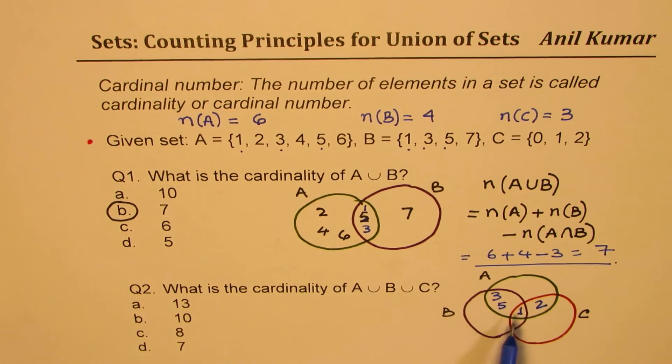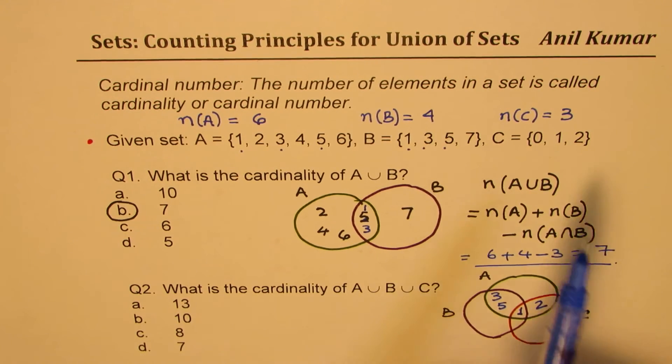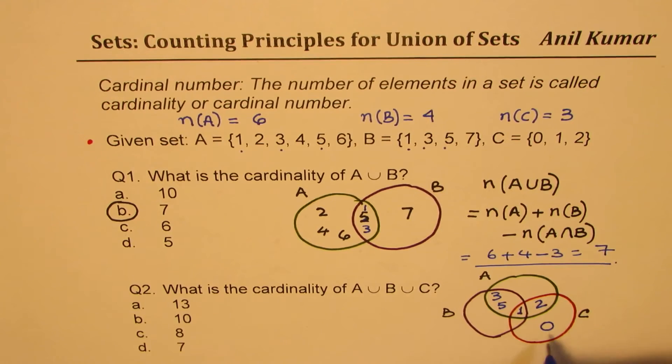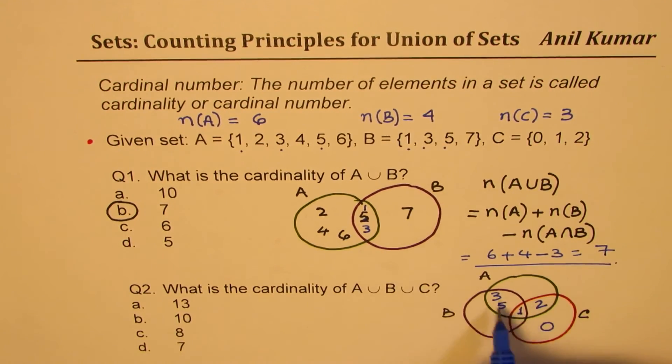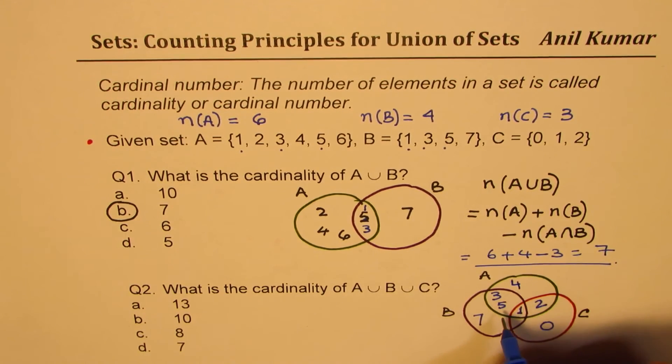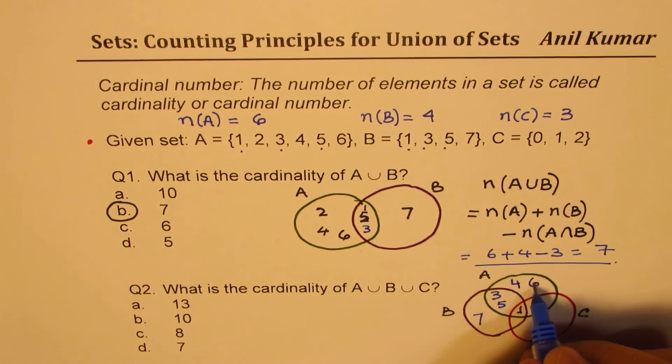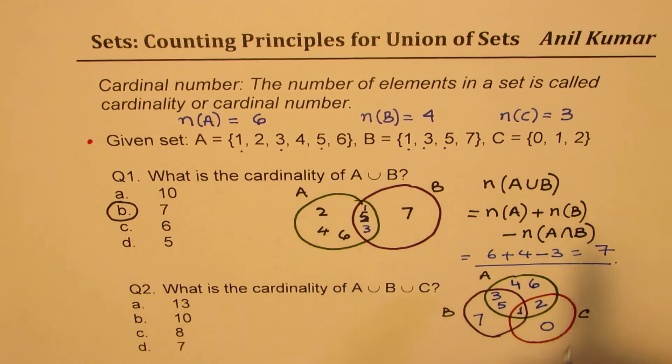Now, you can take the sets individually. Starting with C, zero, one, and two. One and two is already written. Zero, I will take outside. So, that completes the set C. Now, with B, one, three, five, seven. One, three, five is mentioned. Seven, I have taken outside. Now, with set A, one, two, three, four is missing. Five is there and then six is missing. So, count. We have six elements. One, two, three, four, five. All six are there.